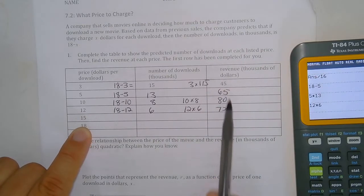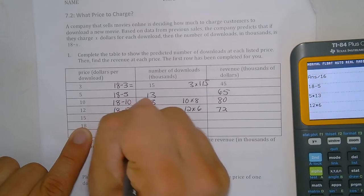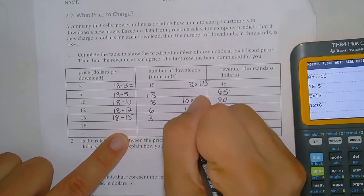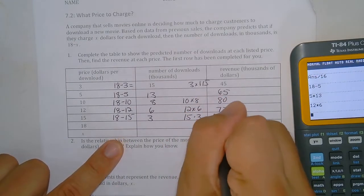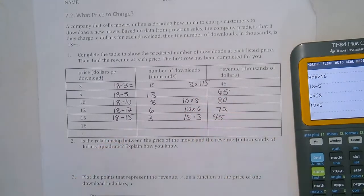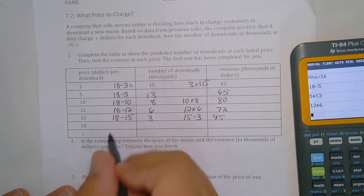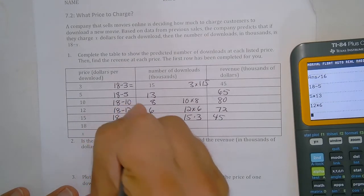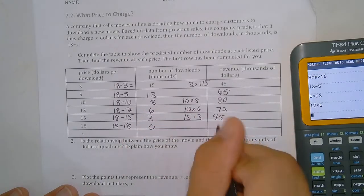So our revenue now is decreasing. So then here 18 minus 15 is 3, and 15 times 3 is 45. And then lastly, if we had a price of 18, 18 minus 18 would give us zero downloads, and 18 times 0 is 0.